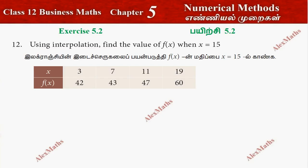Hi students, this is exercise 5.2 question number 12. Using interpolation, find the value of f(x) when x equals 15. The difference between 3 and 7 is 4, between 7 and 11 is 4, but between 11 and 19 is 8 difference. So we have uneven differences, therefore we use Lagrange's interpolation formula.